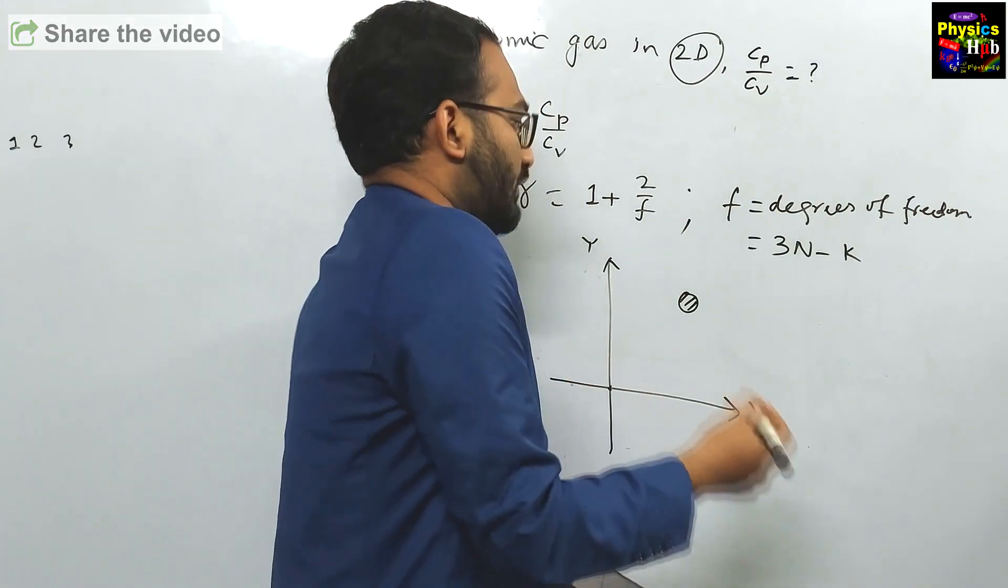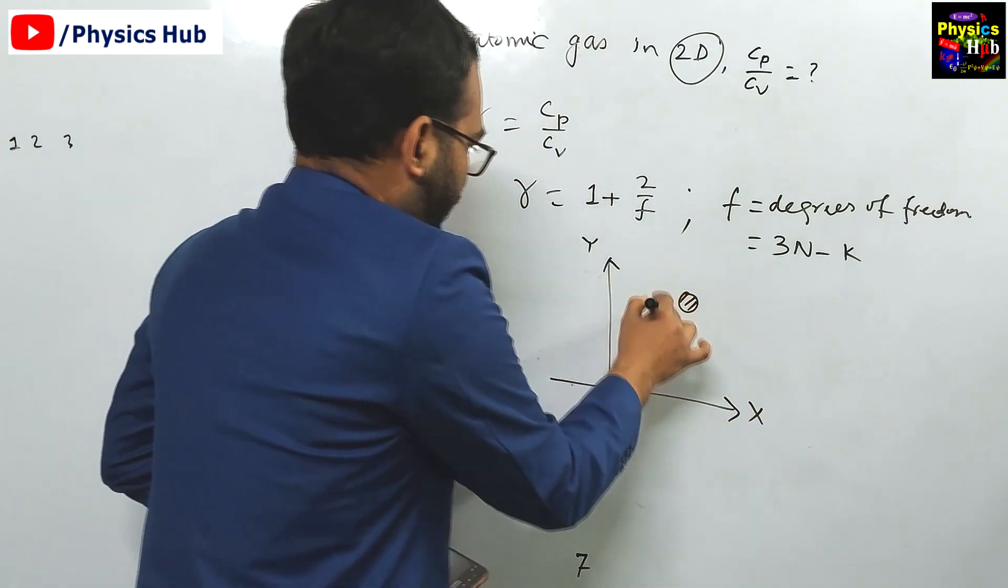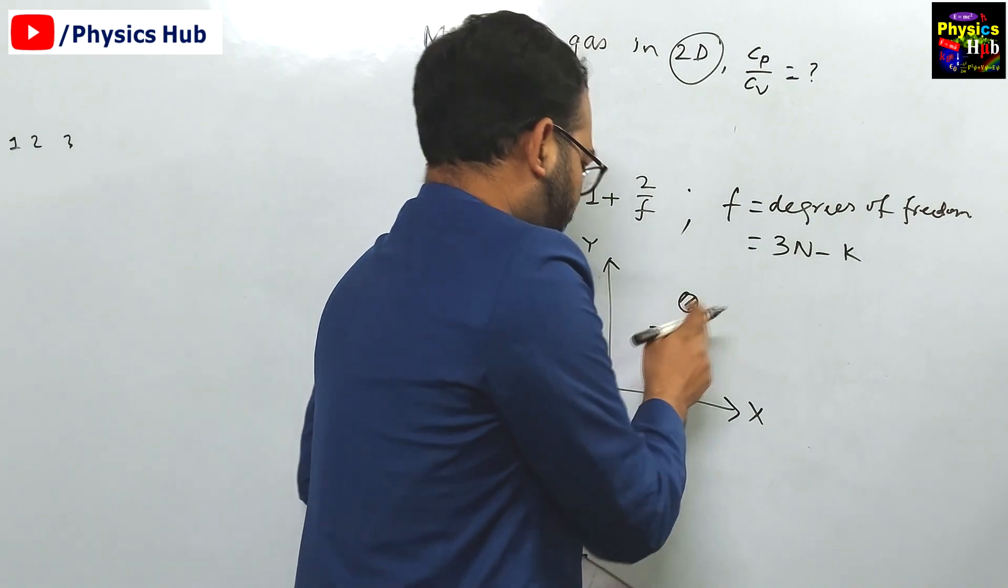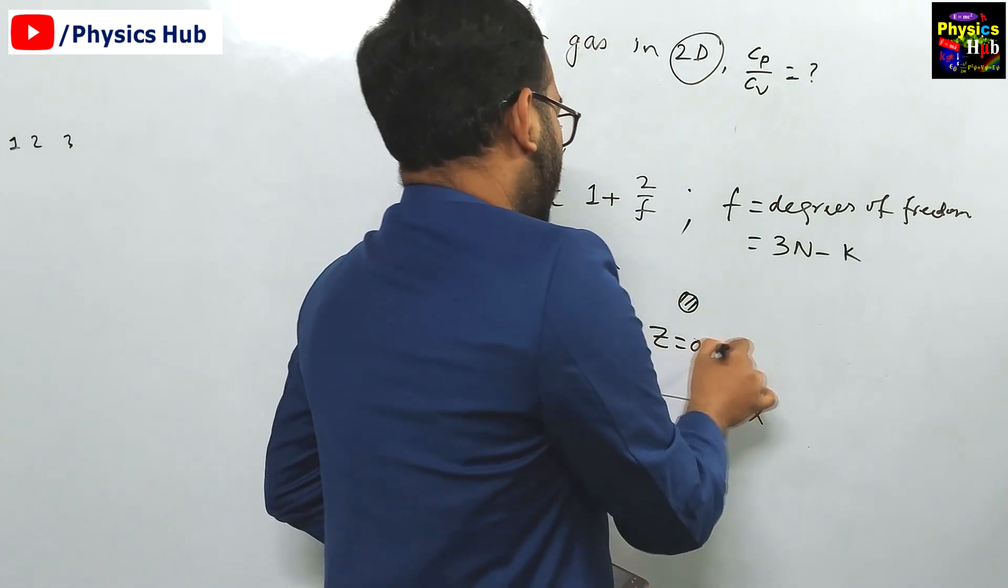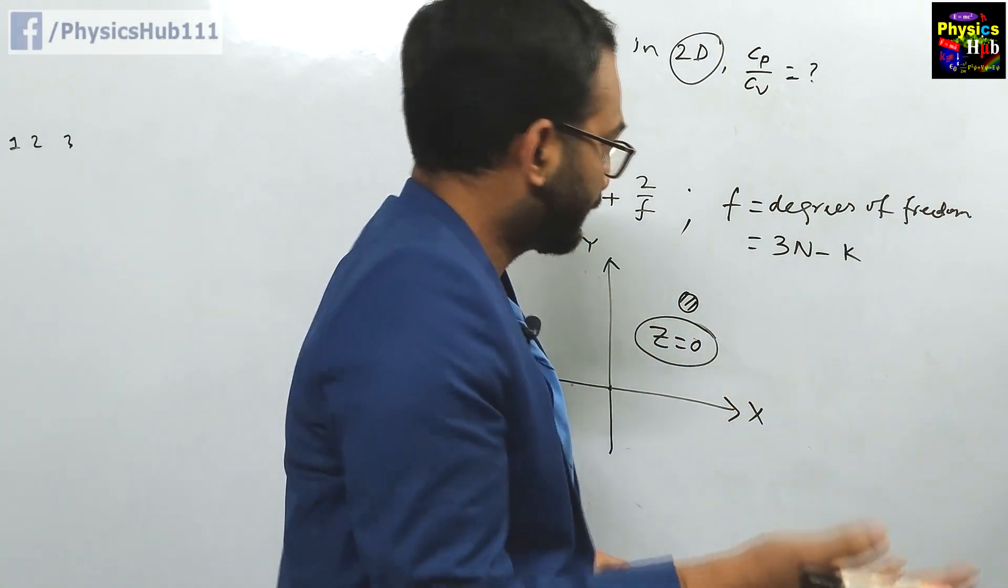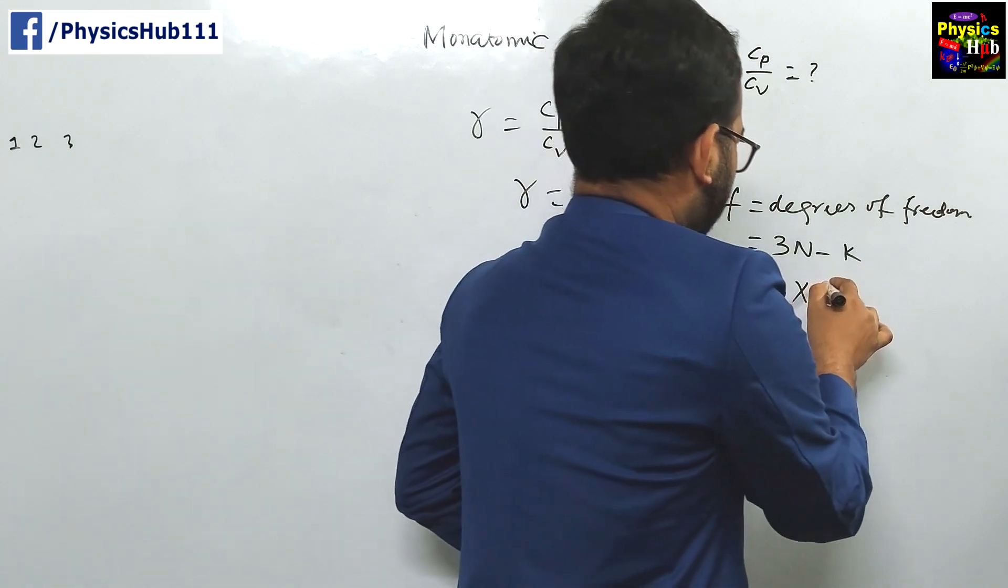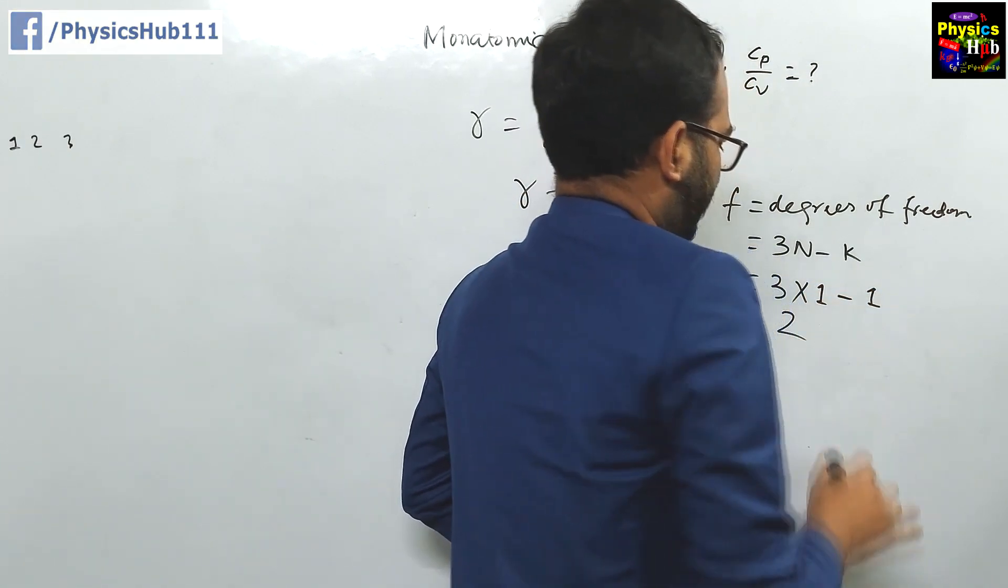What is the constraint equation? You can say for this molecule z is equals to 0 every time because it is moving in 2D. So the number of constraint equations is 1, z equals to 0. So 3 into n is the number of molecules here, monoatomic atom, so 1 minus 1. So this is 2.